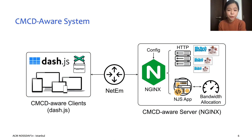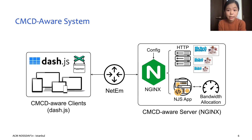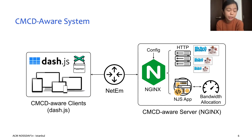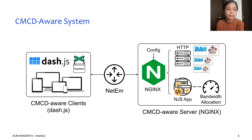This is an overview of the overall architecture of our proof-of-concept CMCD-aware system, mainly consisting of a CMCD-aware server and a CMCD-aware client. The server is an HTTP streaming server that contains DASH-compliant media files ready to be retrieved by our Dash.js streaming client. The HTTP server runs on NGINX, which we use to implement our server-side bandwidth allocation scheme. For our experiments, we also run the TC-NETEM tool to simulate different network conditions under different test cases.